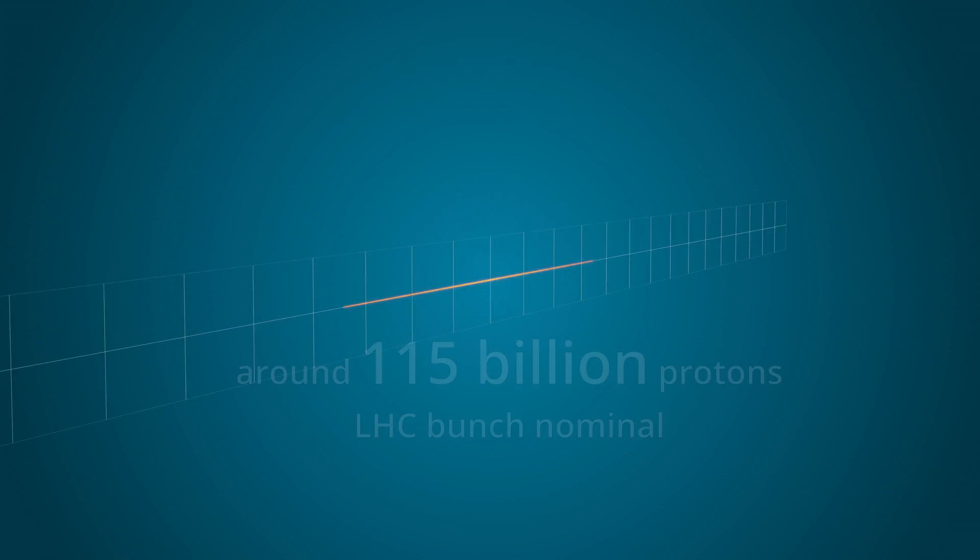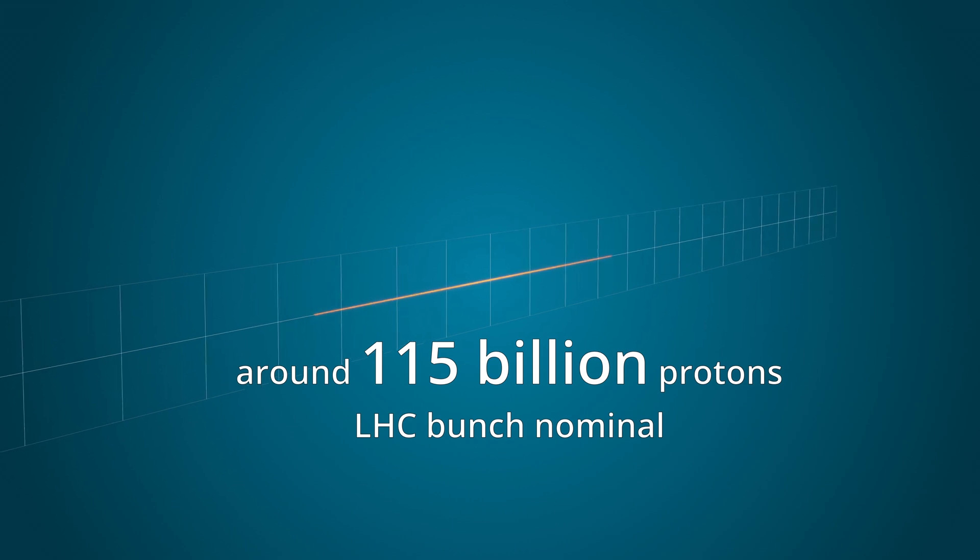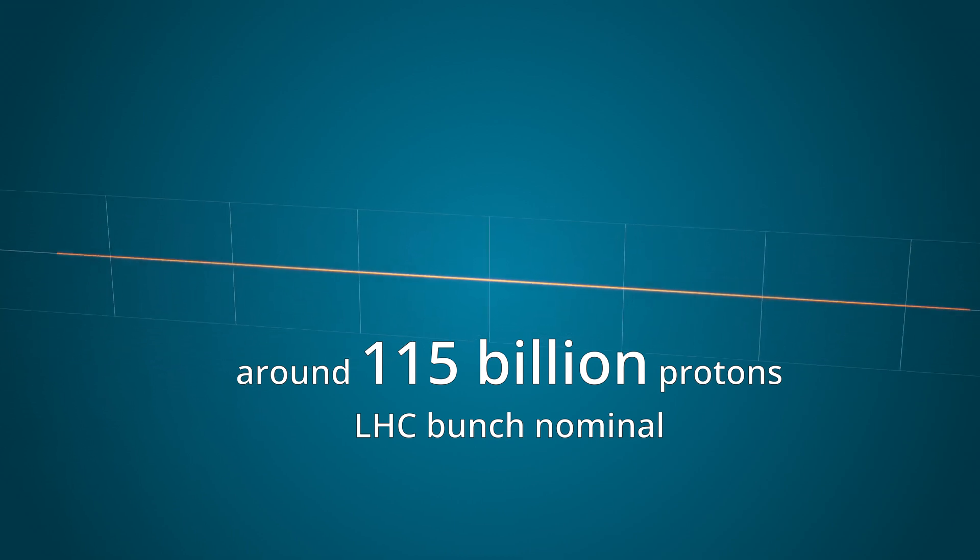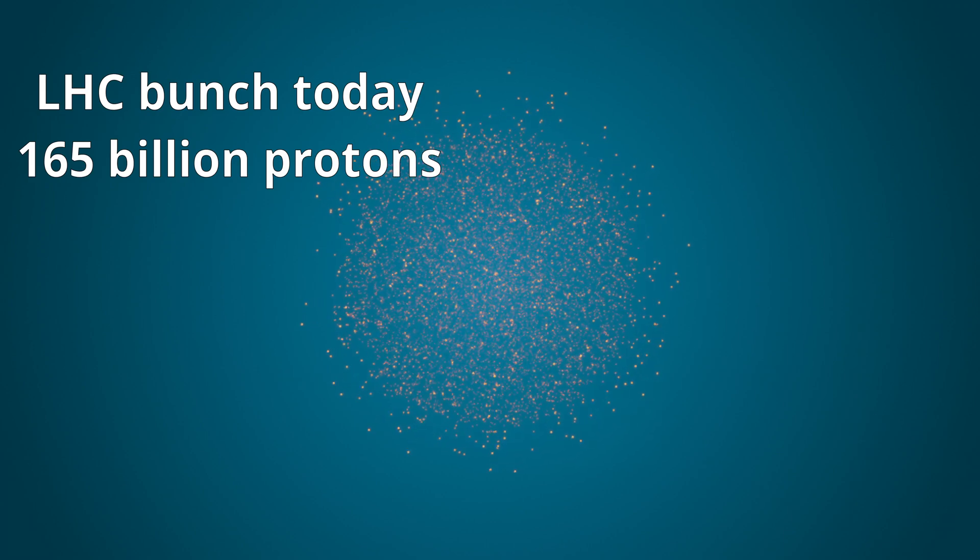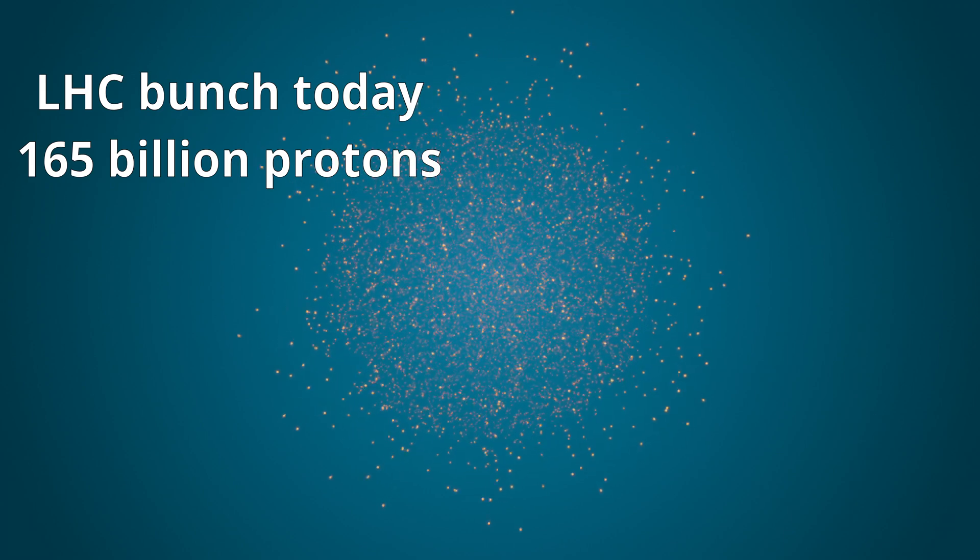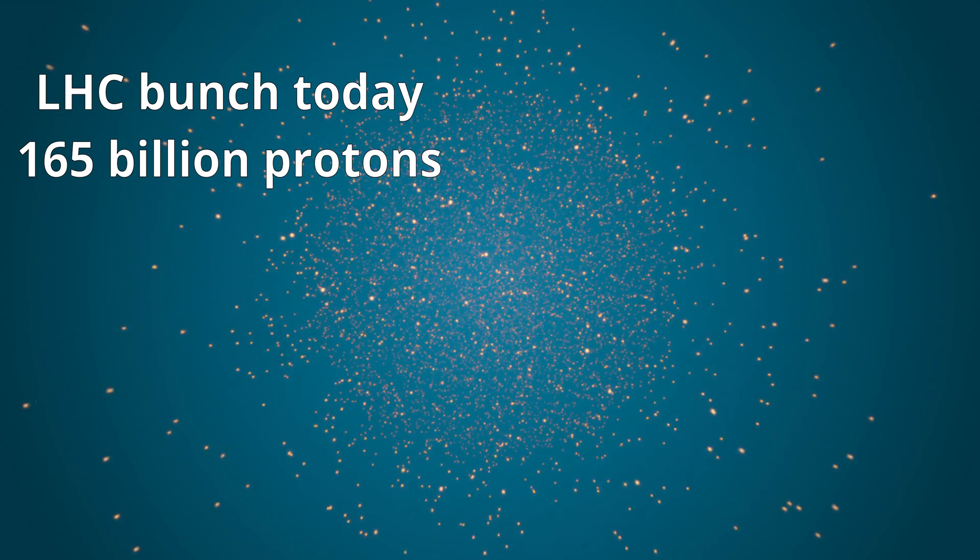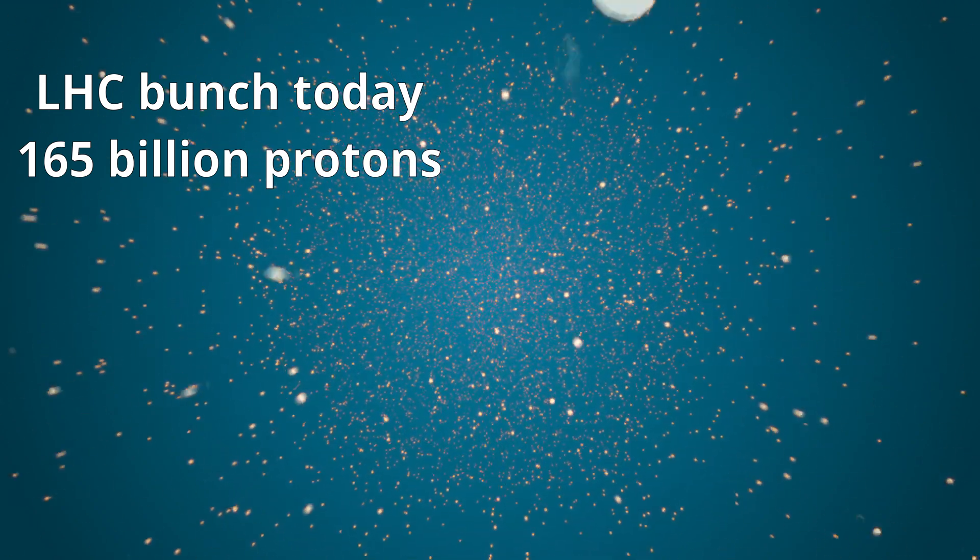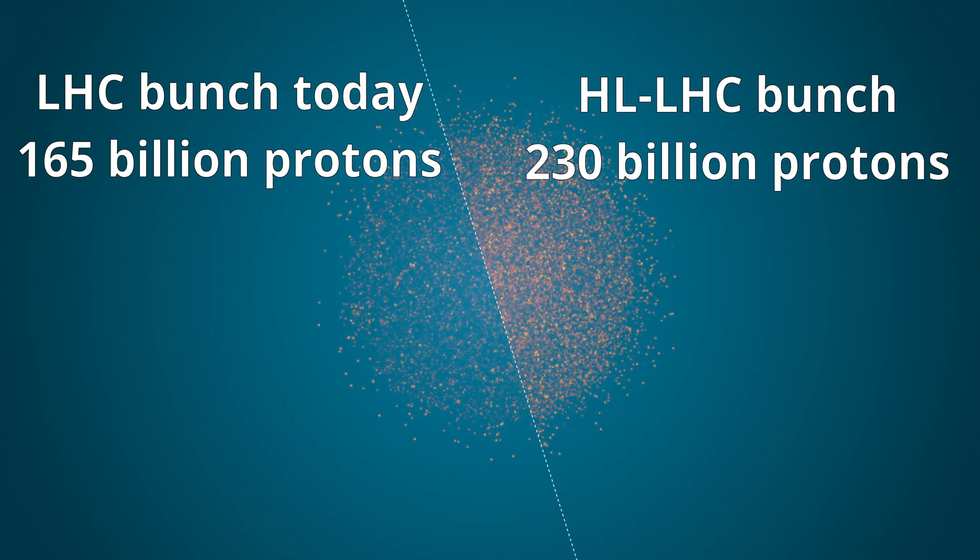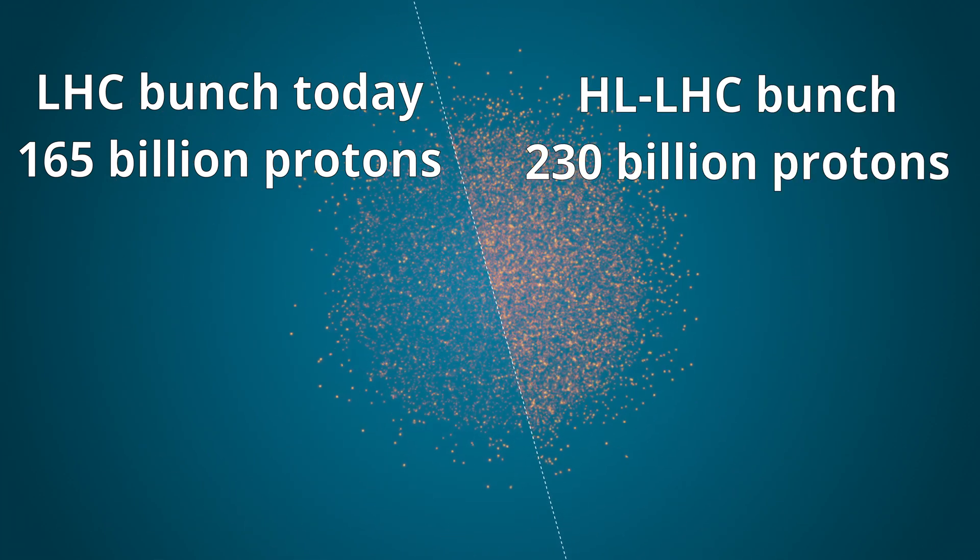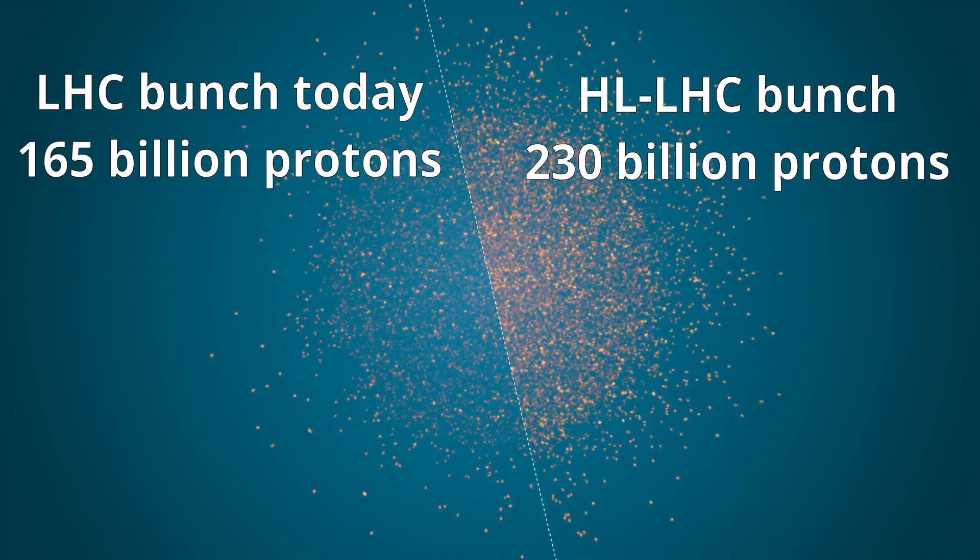The LHC design considered a bunch with an intensity of 1.15 times 10 to the power of 11. In today's LHC, each bunch carries around 1.65 times 10 to the power of 11 protons, thanks to the partial use of LIU beams. With the upgraded injectors, each bunch can now hold more than 200 billion, while keeping the beam size under control.